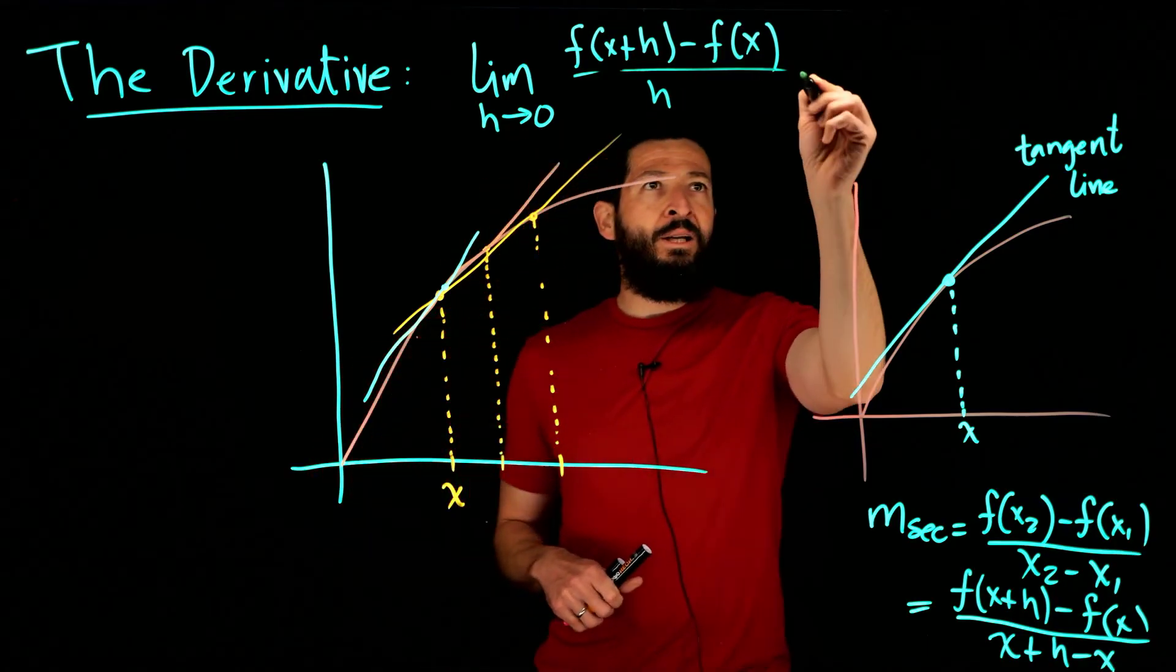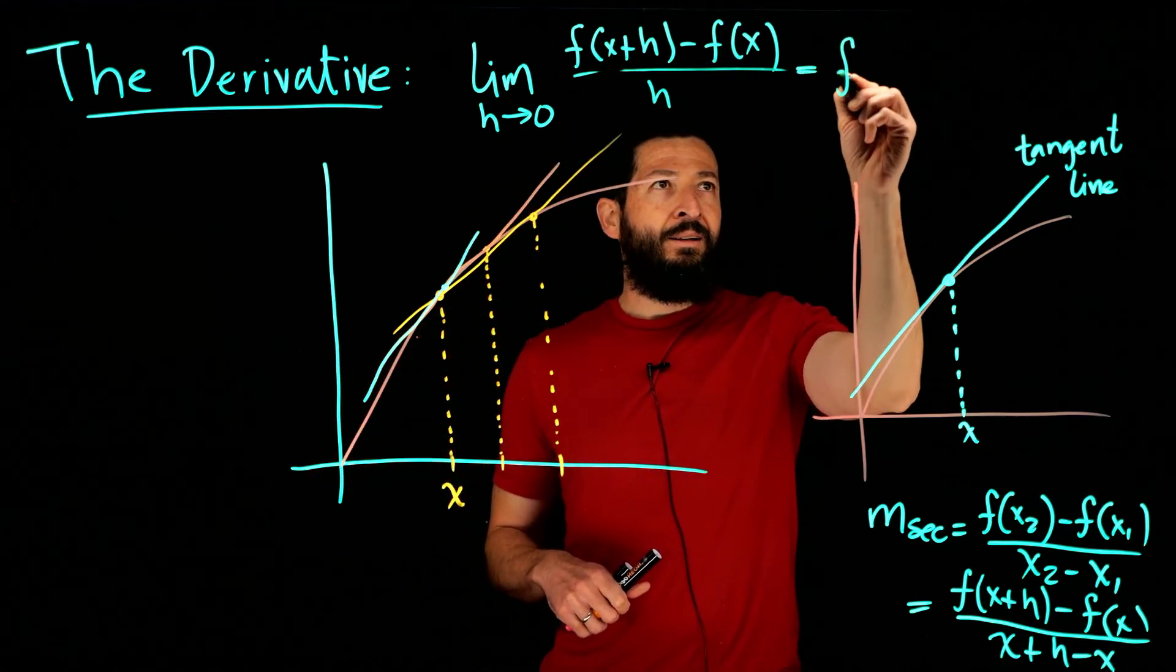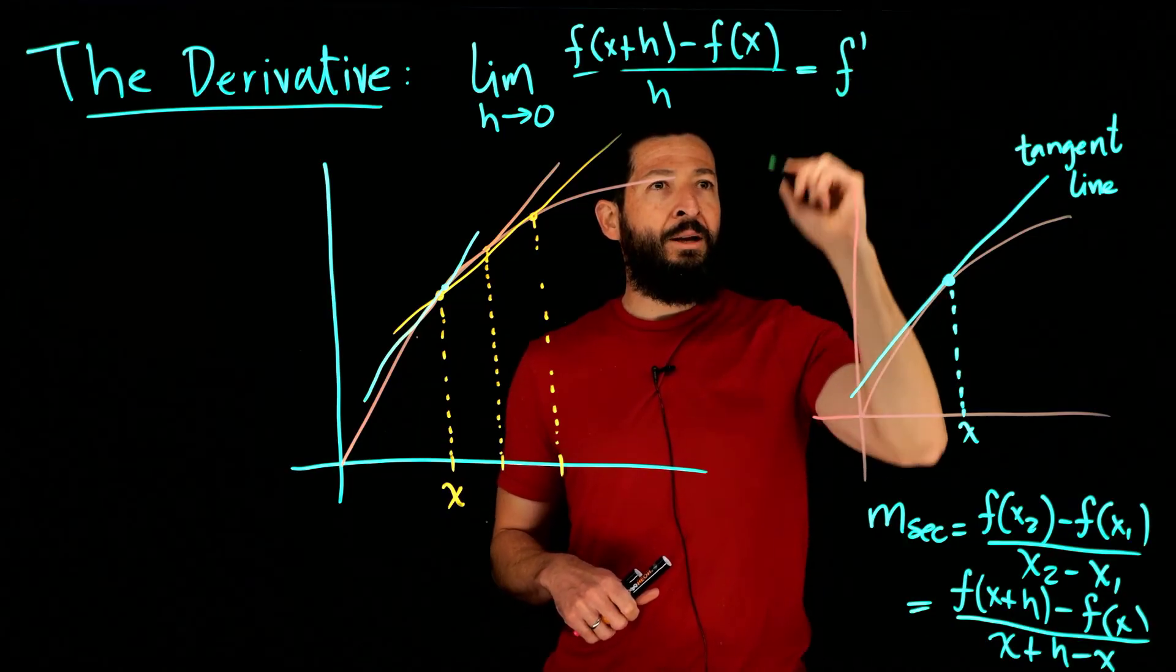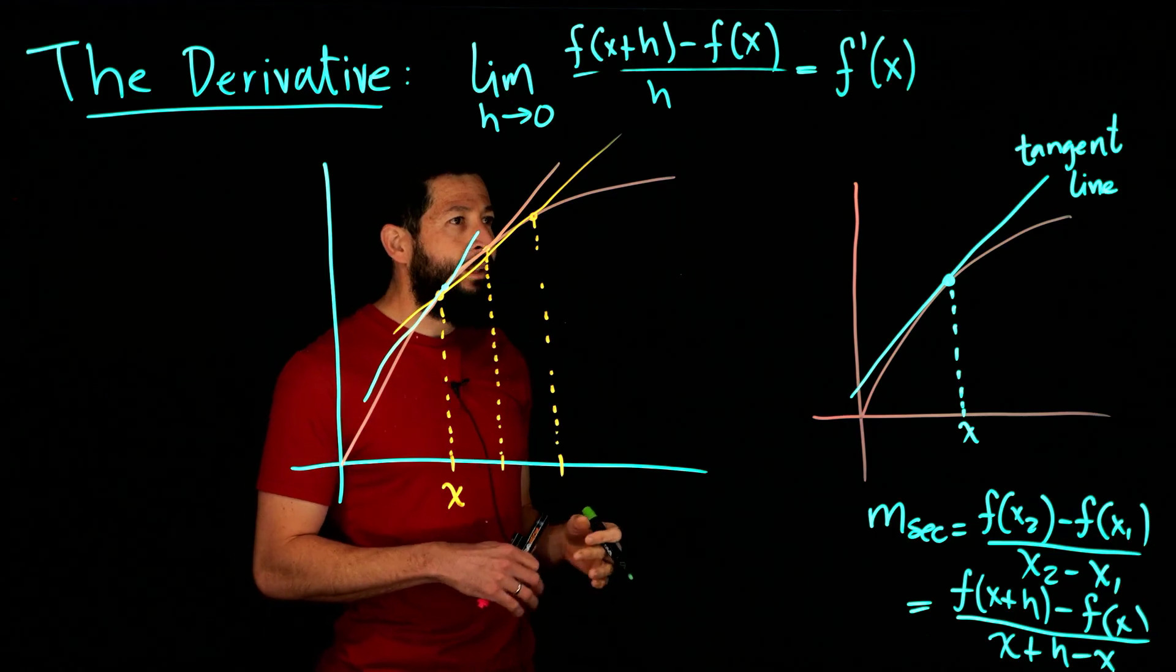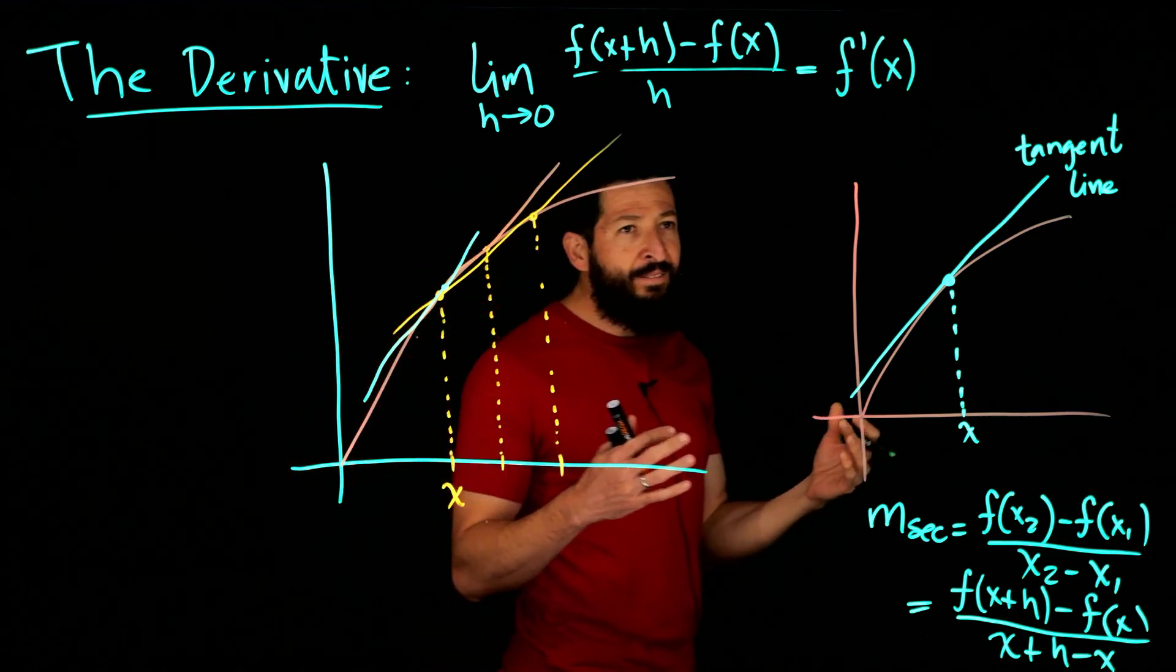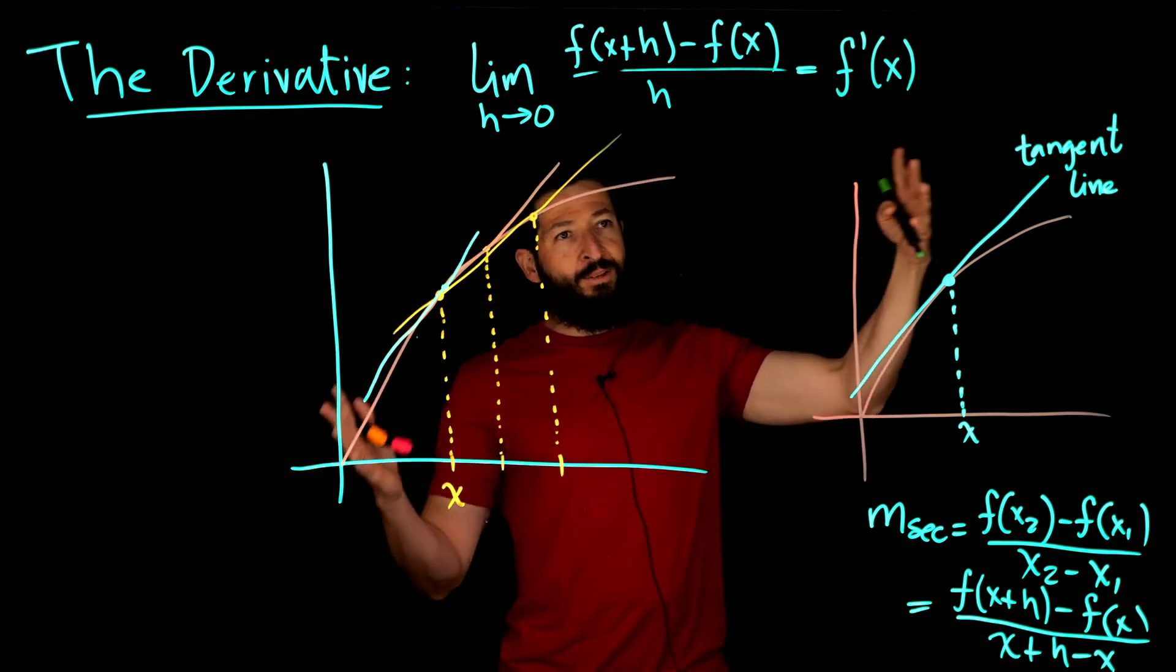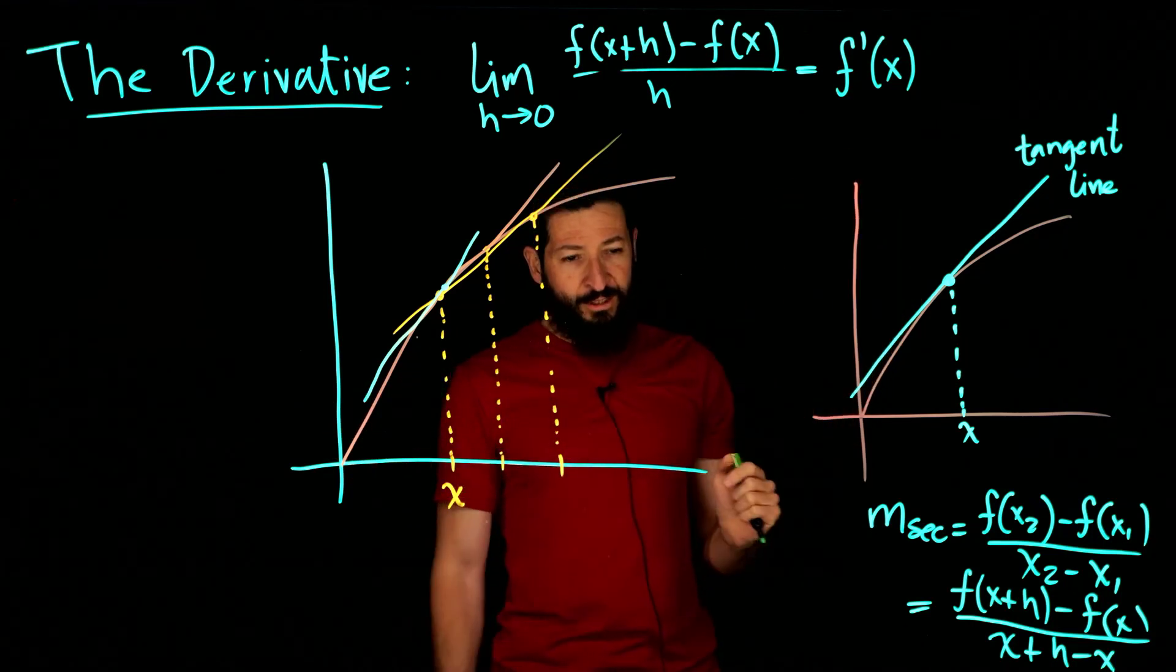That is going to be denoted by the function f prime evaluated at x. That's going to be the derivative. It's going to be giving us an instantaneous rate of change, not an average rate of change but instantaneous rate of change.